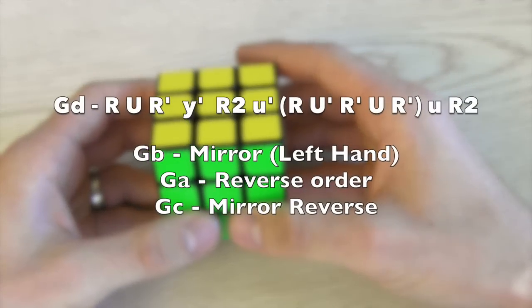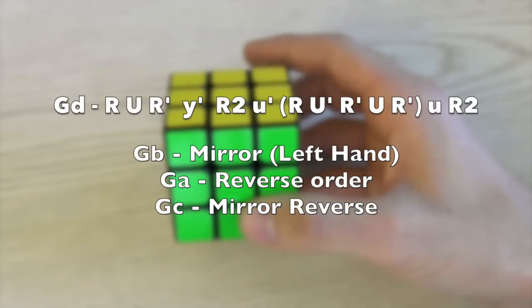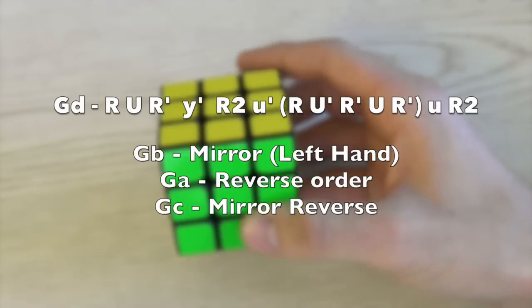So all four G perms are just one algorithm and honestly being able to knock out four PLLs with one algorithm seems to be something you would want to do first.